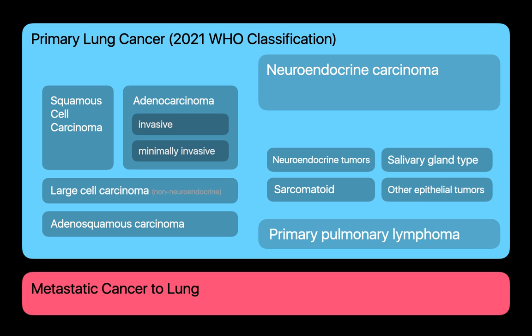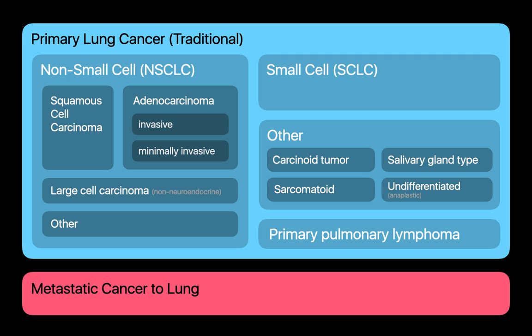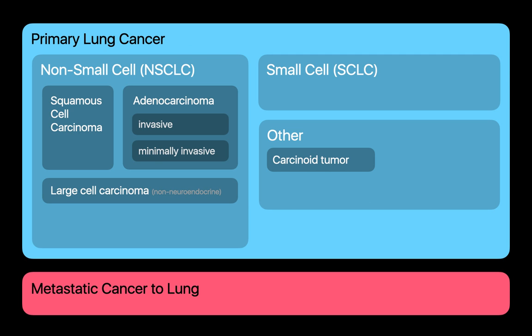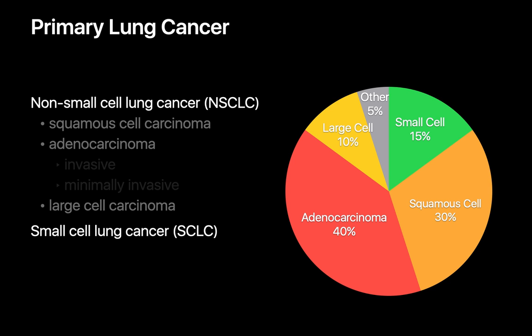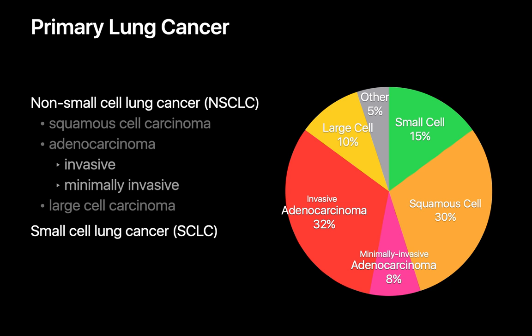I still find it more convenient to conceptualize primary lung cancers the old-fashioned way, and the hierarchy is even simpler if we focus on malignancies we are most likely to encounter in normal practice. 95% of primary lung cancers can be classified as either non-small cell carcinoma or small cell carcinoma, and non-small cells outnumber small cells considerably. 80% of all primary lung cancers are non-small cell lung cancers, and half of non-small cell lung cancers are adenocarcinomas. The other half are mostly squamous cell carcinomas. Invasive adenocarcinomas outnumber minimally invasive adenocarcinomas 4 to 1.